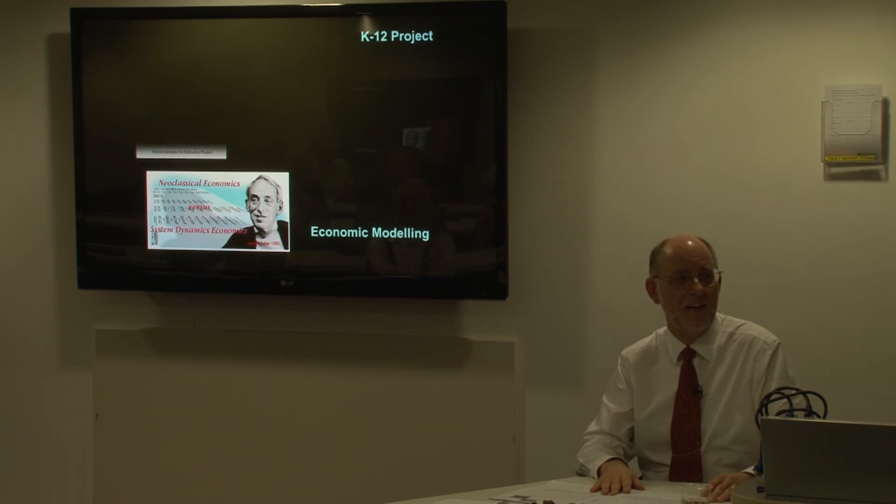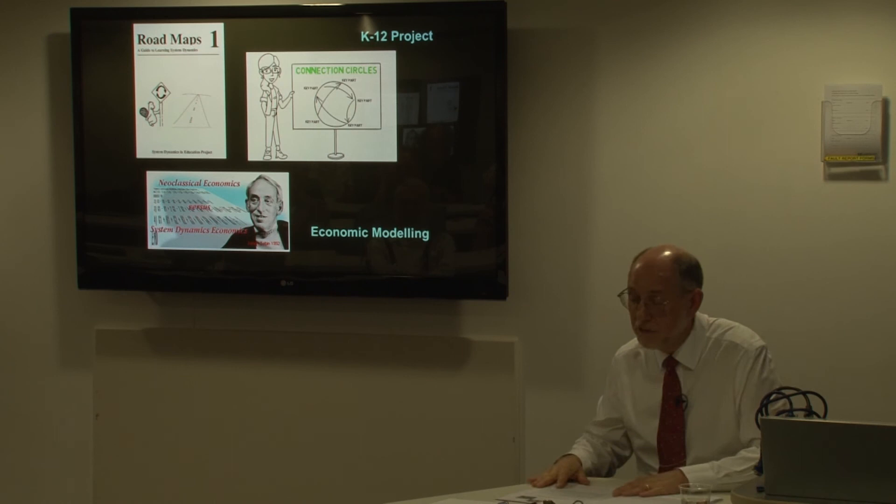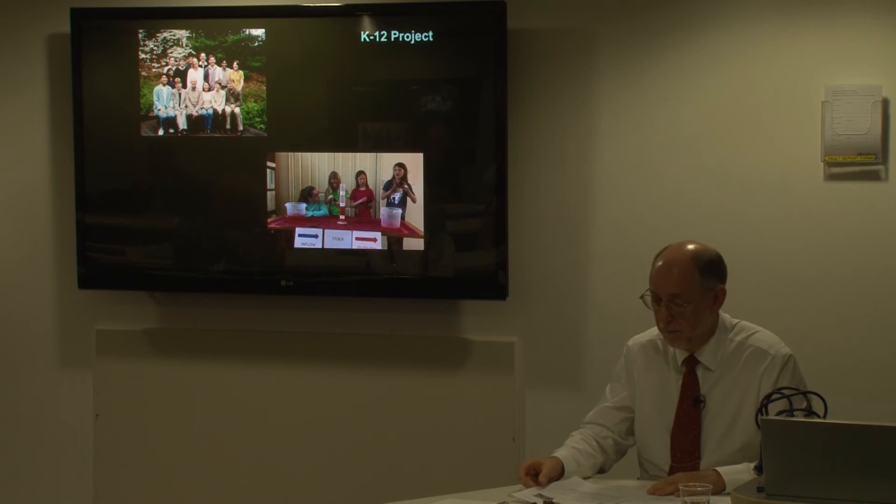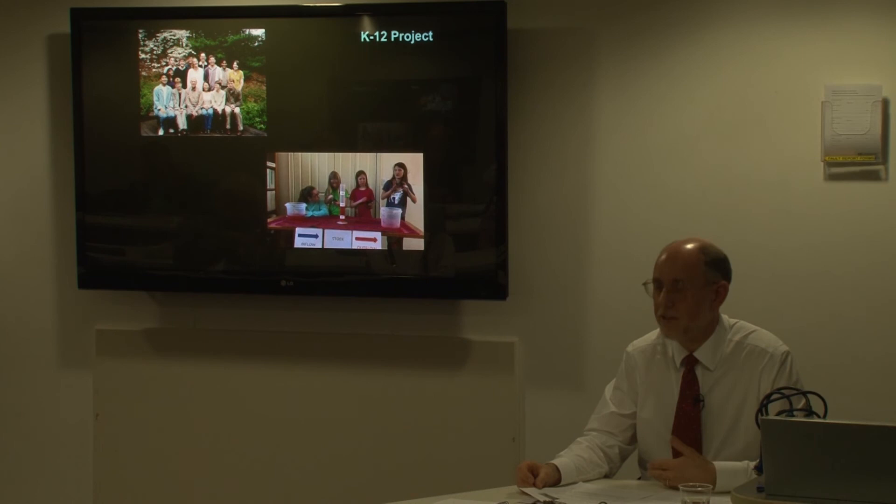He also worked on the K-12 project—K here is kindergarten. This is about bringing system dynamics ideas into schools and even earlier. It produced a string of materials dedicated for young people that Jay advised on. Jay always enjoyed working with young people. Here he is with some high school students. He enjoyed supporting activities relating to children across the age range. This is important because for him, system dynamics and policy design was not for an elite. Jay believed that everyone could gain an appreciation for the complex dynamics of natural and human systems and then use their insights to create a better world. He wanted as many people as possible to be involved in that.